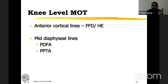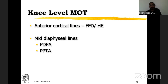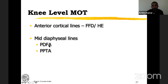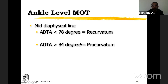Now understanding the lines and joint orientation angles, we start planning for a deformity. The first thing we do is the knee-level malorientation test, because mechanical axis deviation and malalignment test don't have much bearing in sagittal plane deformities. You have two anterior cortical lines to find out whether there is a flexion deformity or hyperextension deformity. Then at the knee, find out the PDFA and PPTA. Draw mid-diaphyseal lines and joint orientation lines; find out the posterior distal femoral angle and posterior proximal tibial angle. For the ankle-level malorientation test, draw the mid-diaphyseal line and the anterior distal tibial angle — less than 78 is recurvatum, more than 84 is procurvatum.